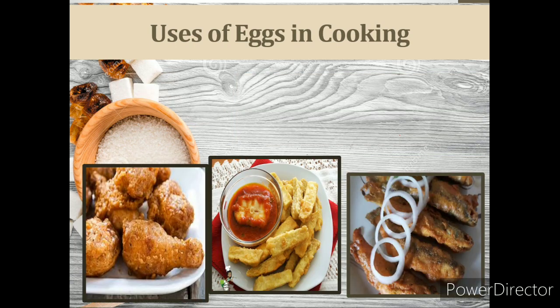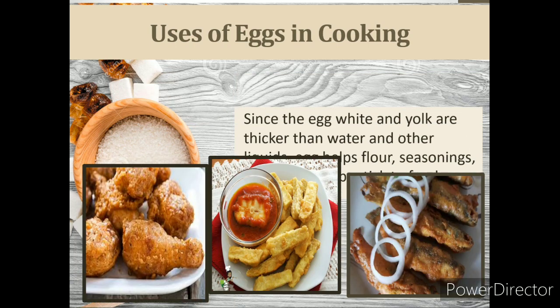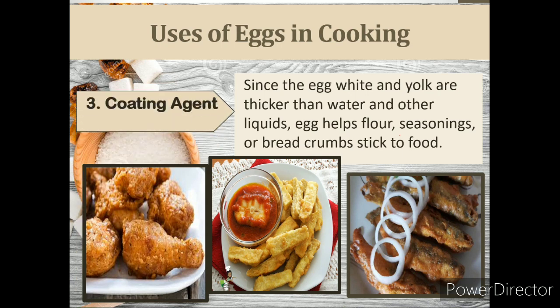The third use of eggs in cooking is as a coating agent. Since egg white and yolk are thicker than water and other liquids, egg helps flour, seasonings, or breadcrumbs stick to the food. The egg batter helps coat food items and prevents them from disintegrating, giving them a protective coating. Many food items such as fish fillet and fried chicken are dipped into the batter before crumbing and then fried. An egg batter provides a binder for added coating.